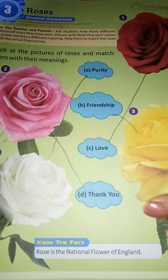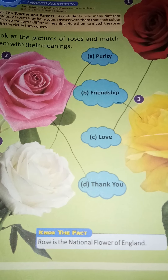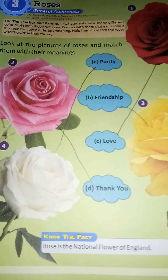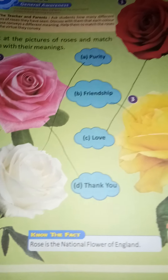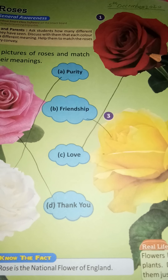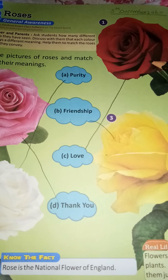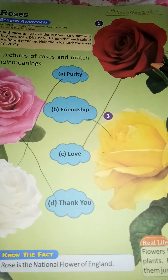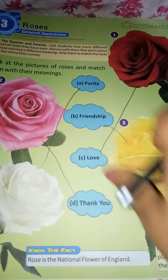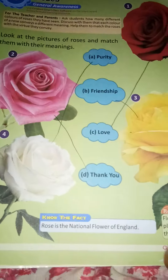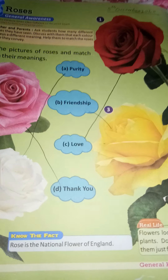Each color of roses conveys a different meaning. For example, this is a red rose. Red rose — what meaning does it convey? It indicates love. Here, there are different colors of roses: pink, white, red, and yellow roses.